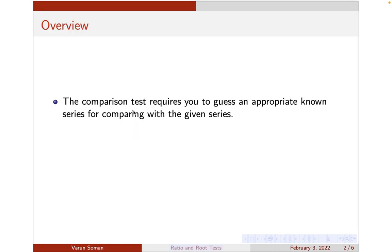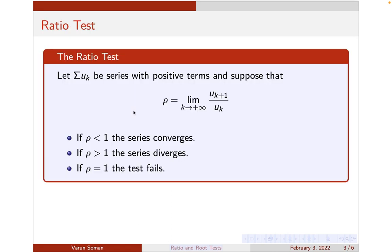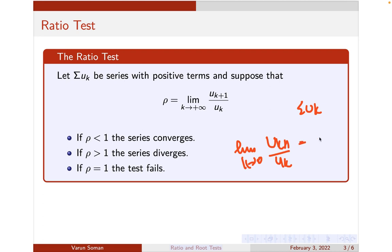Now let us go for the statement of the ratio test. Suppose we have been given a series sigma u_k. What you have to do is form the ratio u_{k+1} by u_k — that is the (k+1)th term divided by u_k — and take the limit as k tends to infinity. That is why it is called the ratio test.